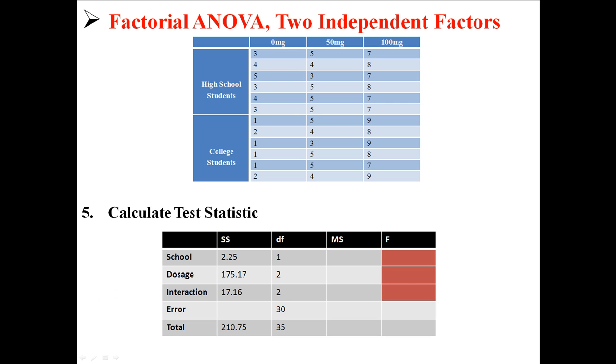So now we go back to our table and we can put in all those sum of squares. Now notice that we're still missing error, but lucky for us that's easy to find. Remember that everything has to add up to total, so we can just subtract what we have from total and find sum of squares error. We can take 210.75 minus sum of squares school, minus sum of squares dosage, minus sum of squares interaction, and we find sum of squares error, which is 16.17.